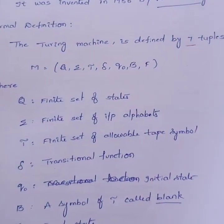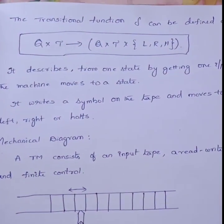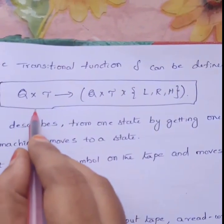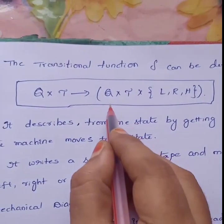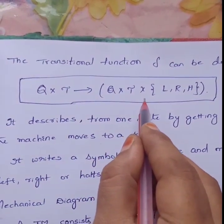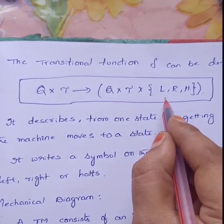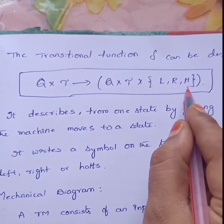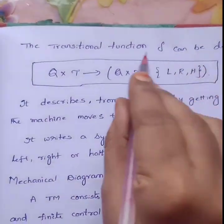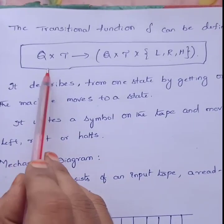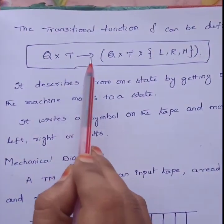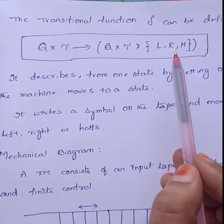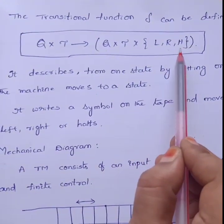The transition function is defined as δ: Q × Γ → Q × Γ × {L, R, H}, where L means left, R means right, and H means halt. The transition function describes how, from one state by reading an input symbol, the machine moves to another state, writes a symbol onto the tape, and moves left, right, or halts.